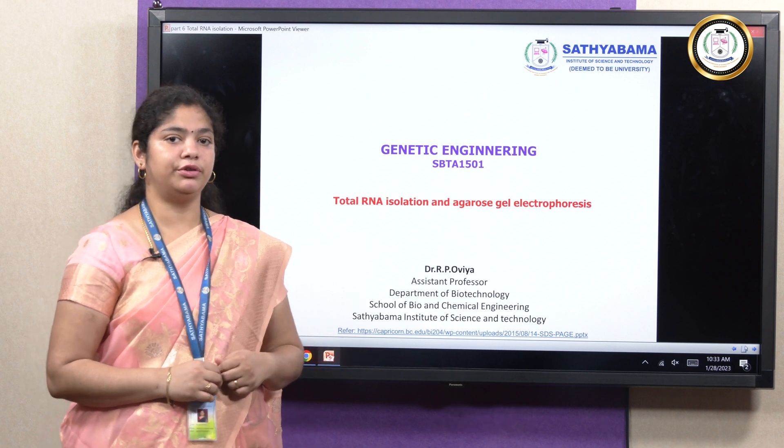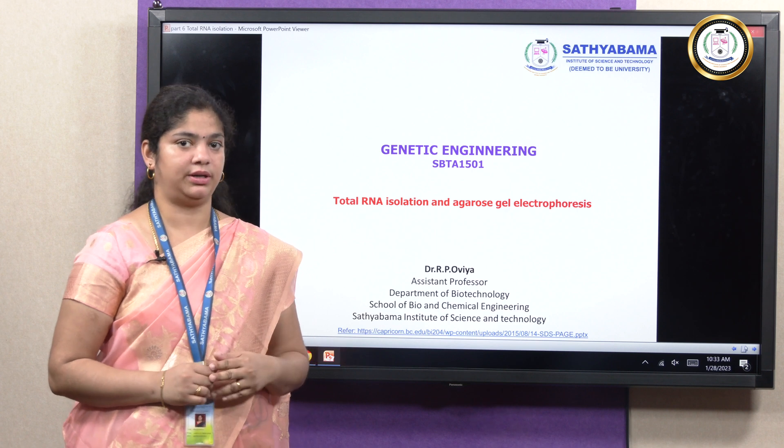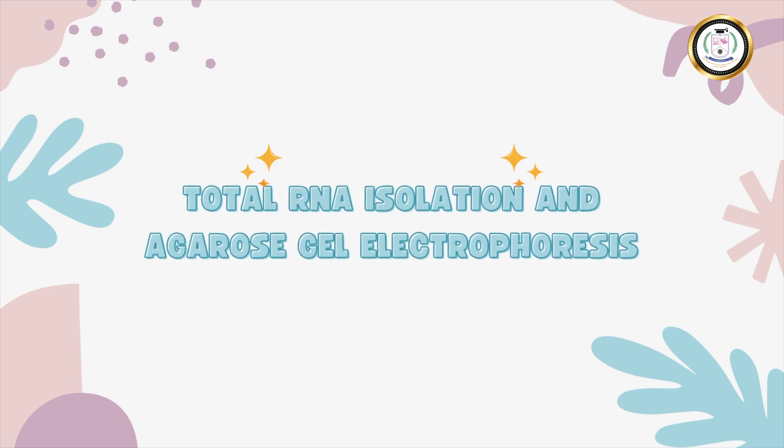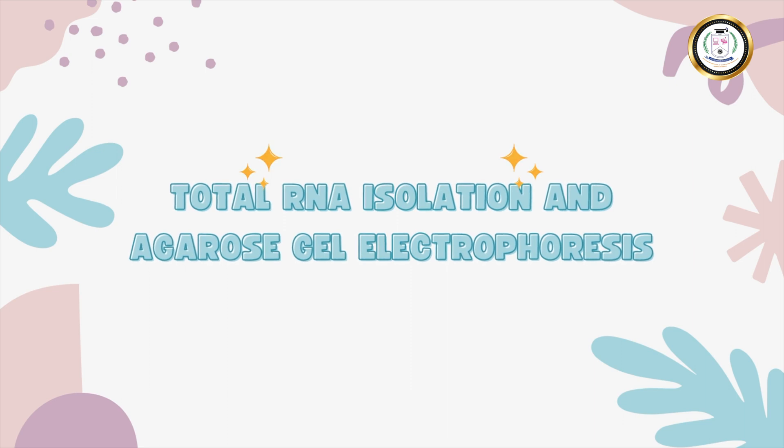In the previous video, we looked into protein techniques that can be used to visualize a protein. Here we will look into a genomic method where we will do total RNA isolation and look for the presence of RNA using agarose gel electrophoresis.